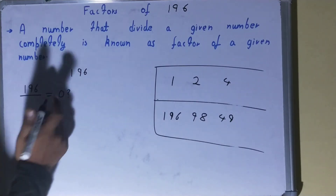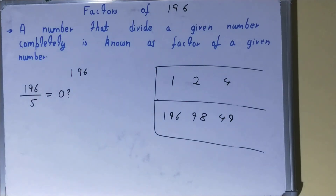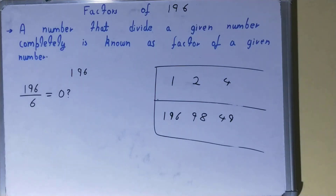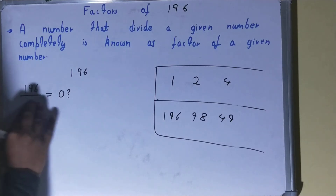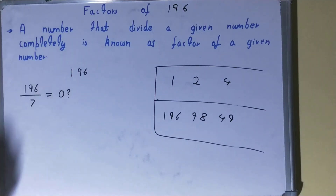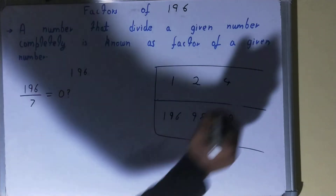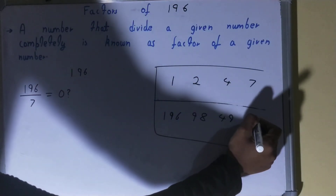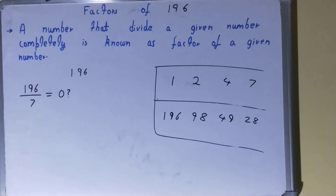After four, we try five — the last digit is neither five nor zero, so not divisible by five. Six is also not possible. Let's try seven: 7 times 28 is 196, so seven is a factor and 28 is also a factor.